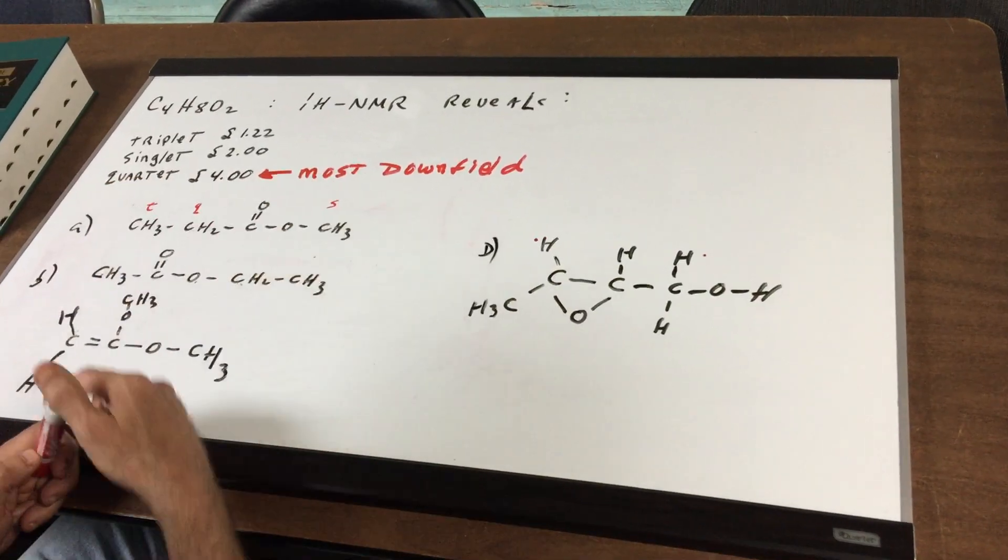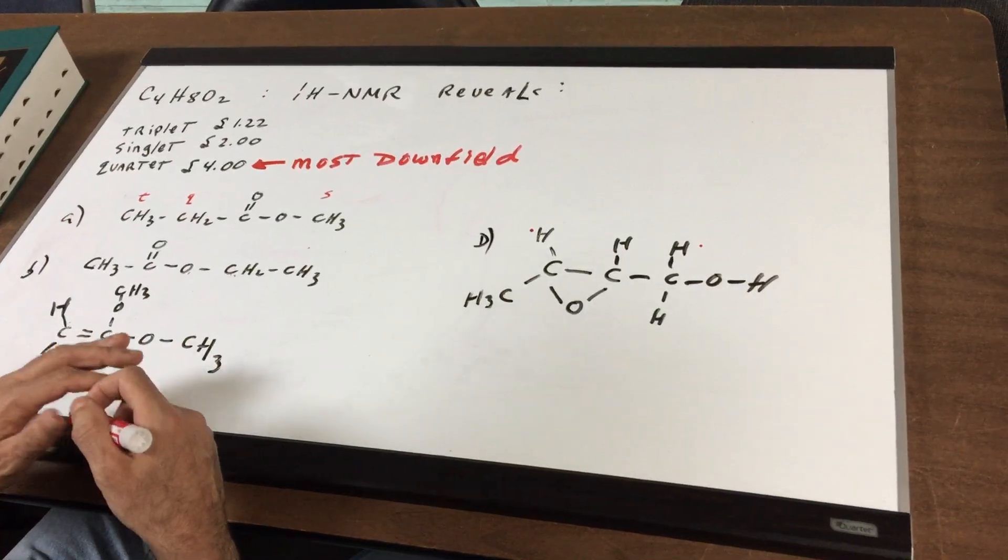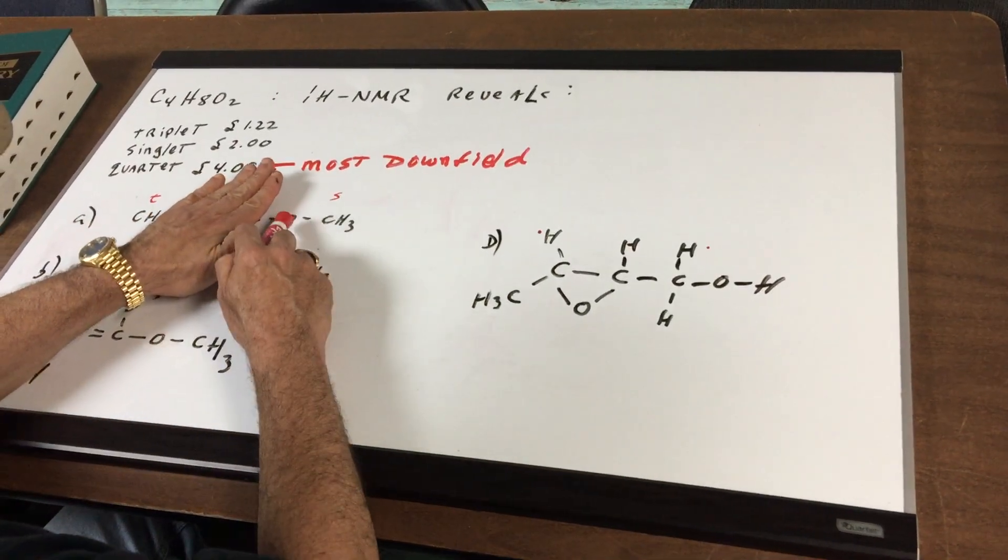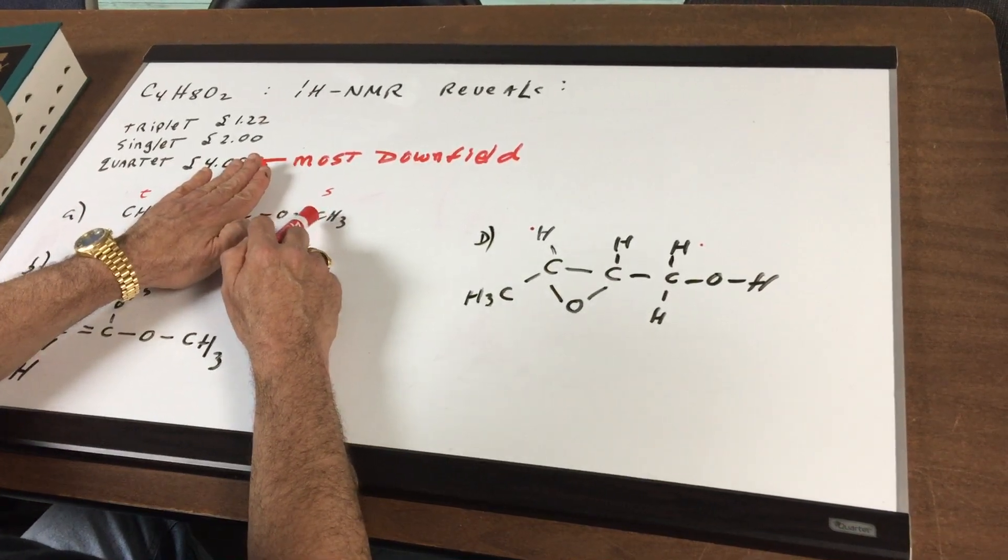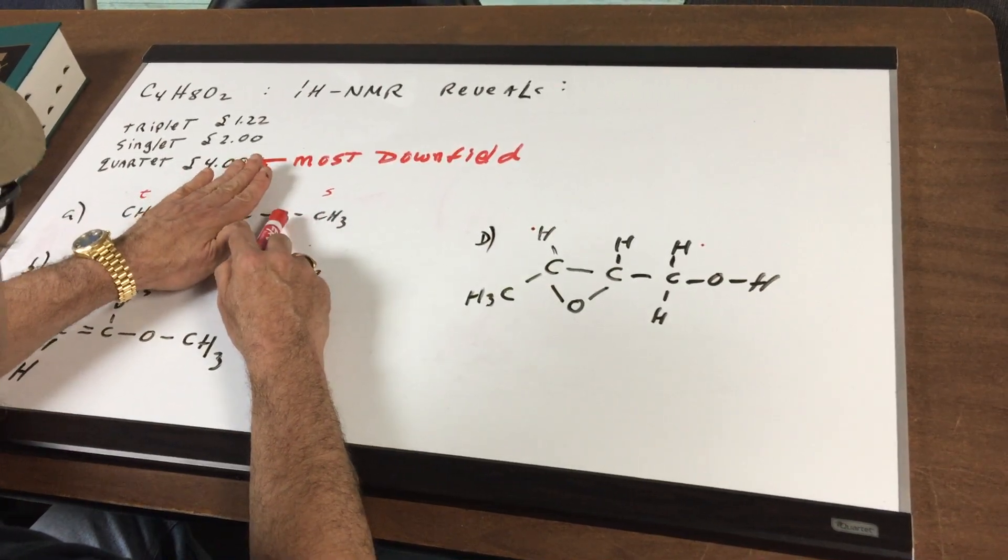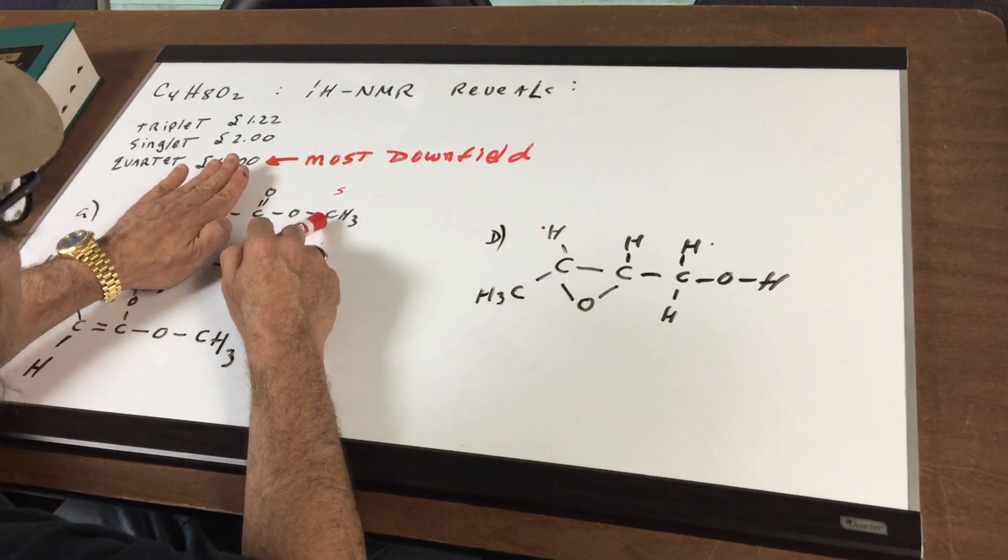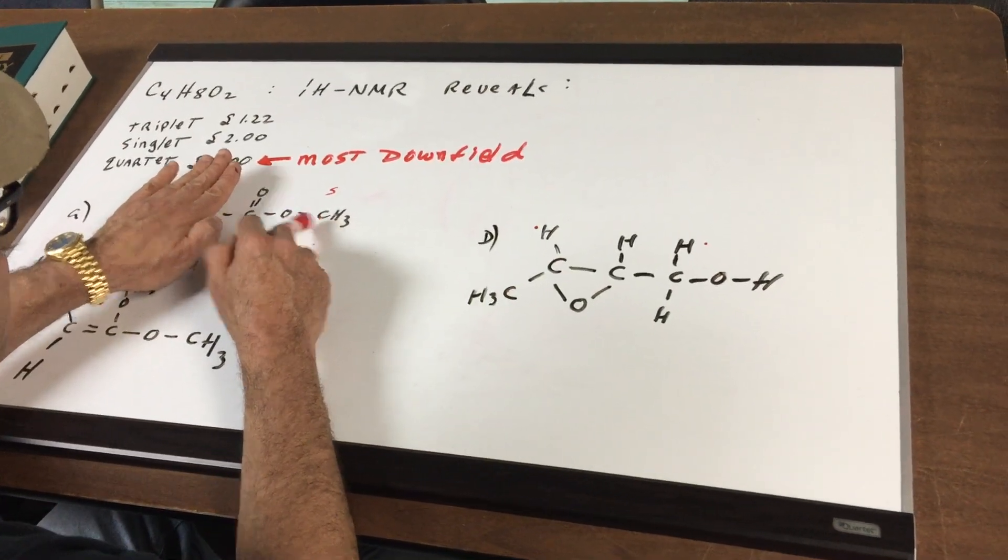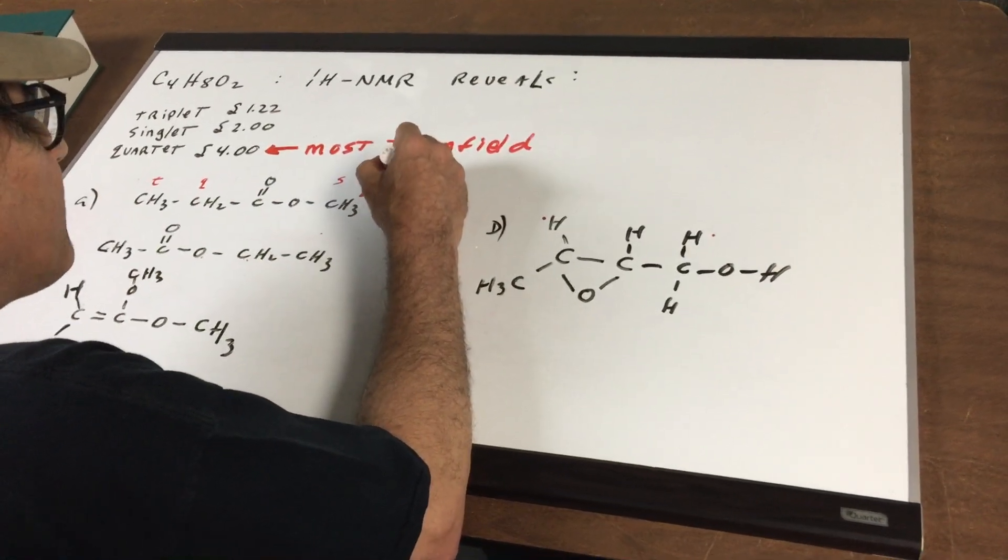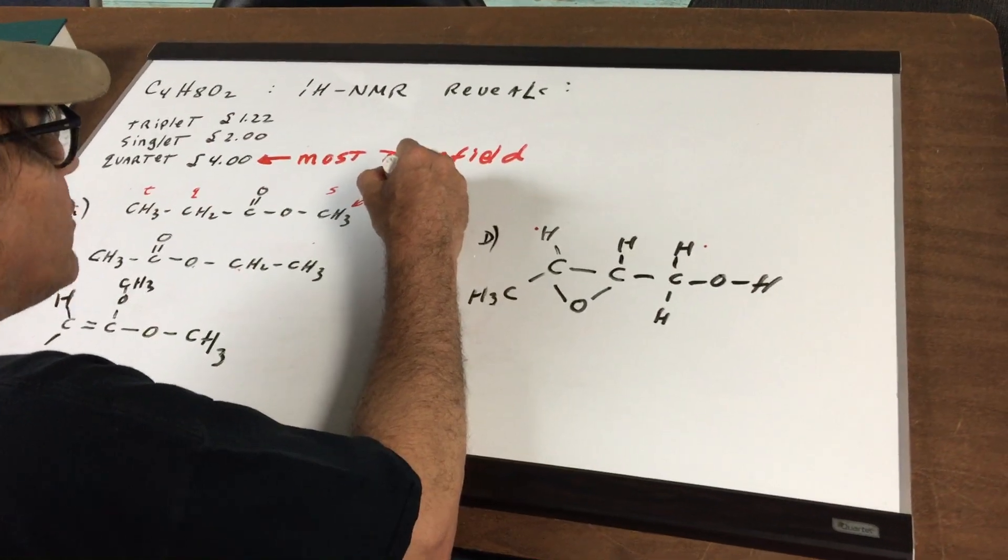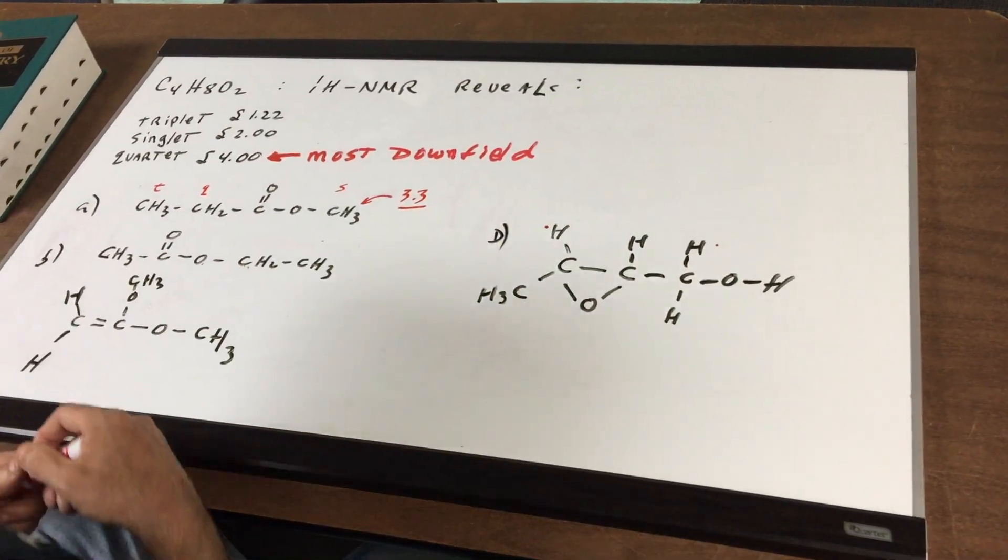I hope you can see that the singlet would be the most downfield signal because these H's are on a carbon that's adjacent to all these negative groups or negative atoms. So I would expect this to have the most downfield signal as a singlet. And as you can see, the most downfield signal would be a quartet. Besides, I also want you to remember something that an OCH3 group comes in around three on the delta scale. So if it was an O and then there's a carbonyl attached, that would bring this a little further downfield. So that means I would expect a singlet downfield at around 3.3 and that's surely not seen.